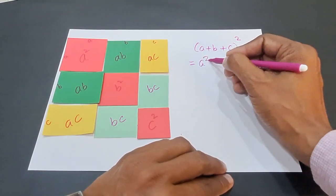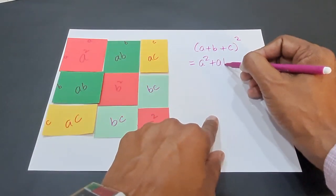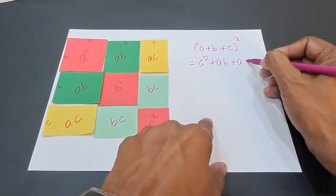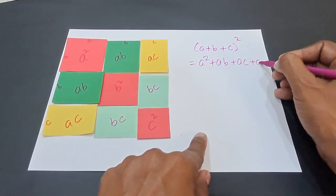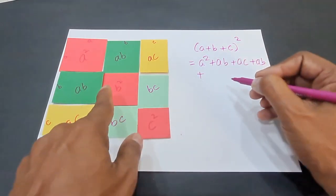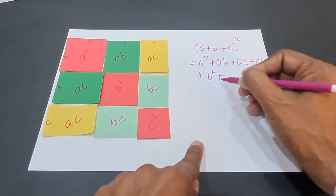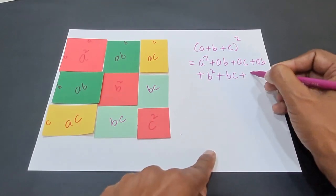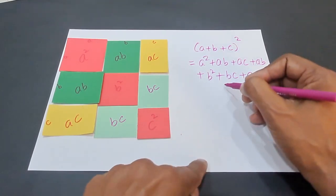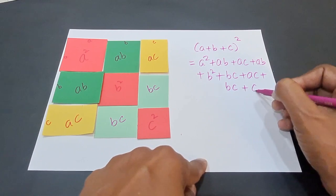A² plus AB plus AC plus AB plus B² plus BC plus AC plus BC plus C².